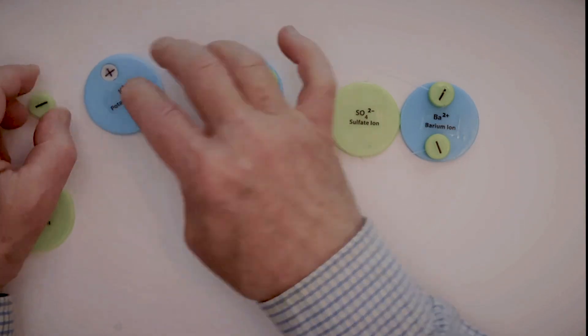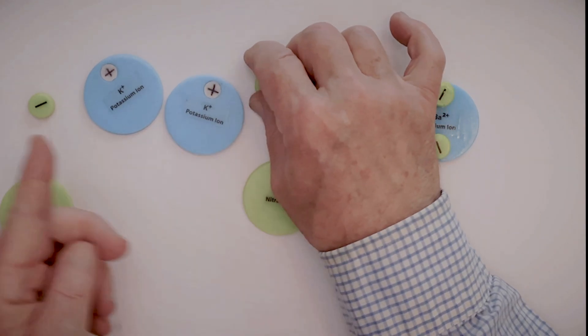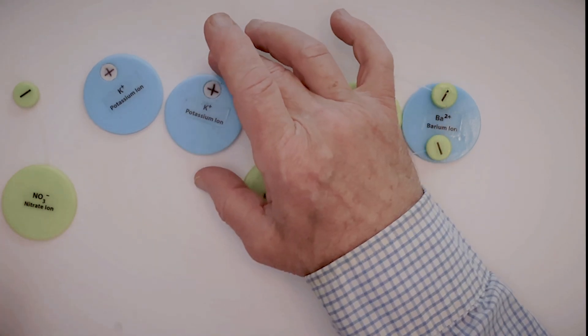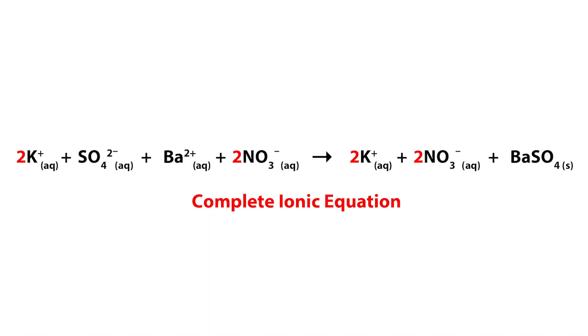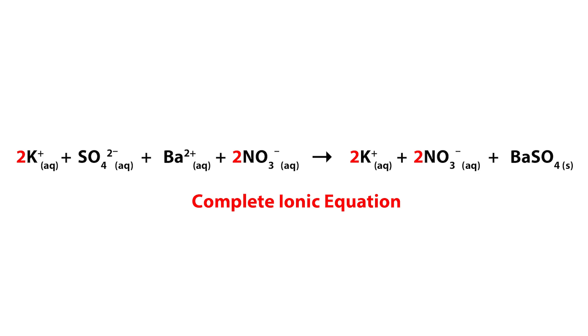But the potassium nitrate, they're going on, coming off, going on, coming off. And so we can talk about the ions that are in the solution. Well, there's two potassium ions, and there's two nitrate ions.